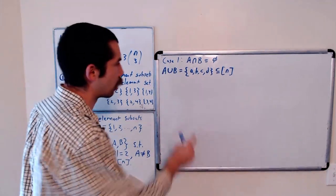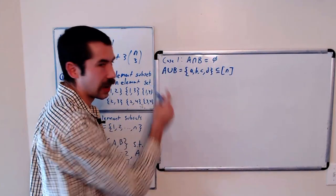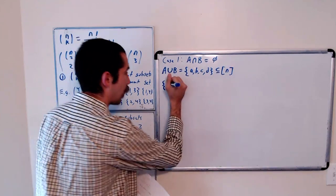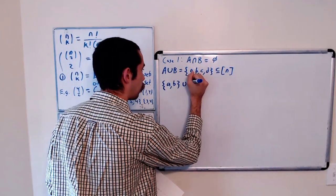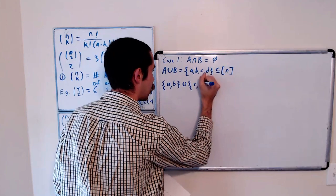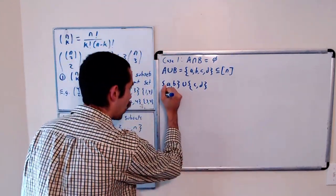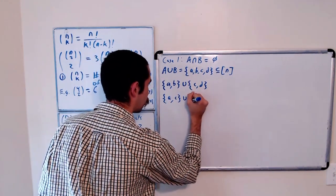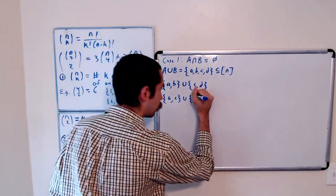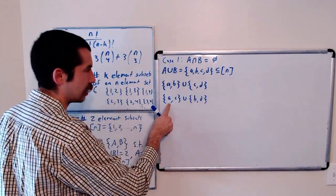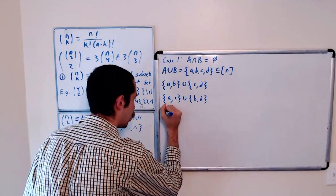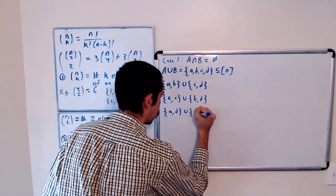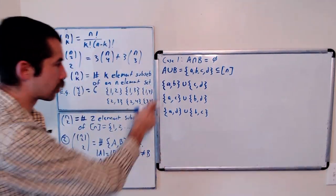And there are 3 different ways that this could happen. You know, without loss of generality, we could assume that a is in the set a. So there's 3 ways this could happen. It could be a, b, union with c, d. Or maybe we had a, c, union with b, d. And then the last case is a and d are together. So a, d, union with b, c.